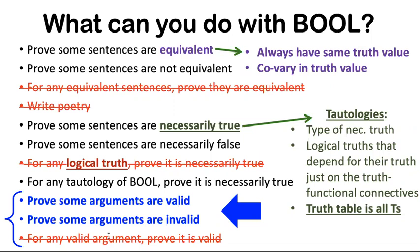And why is that? What we're going to see is that the same facts that came up with equivalence and necessary truth come up with validity too. If the validity of the argument depends upon the truth functional connectives, then Boole can handle it. But if the validity depends upon some other part of logic, then that's outside the scope or the powers of Boole.